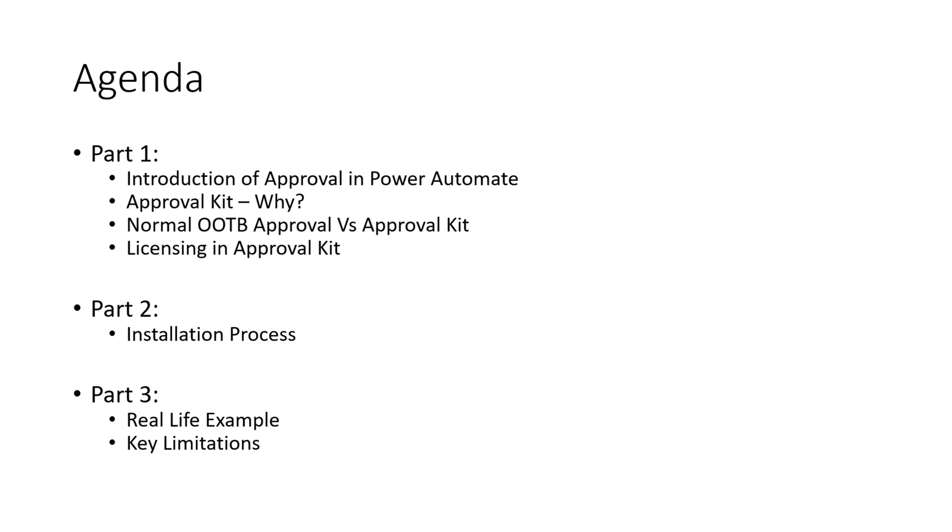The first question that arises in our mind is that the approval action is already available in Power Automate in the out-of-the-box way. Then what does this kit additionally add as a feature set? We'll talk about those things in depth throughout this three-part step-by-step series. In the first part we will be talking about what is Power Automate Approval Kit, how it makes our life easier, how it is different from the out-of-the-box approval action, what rich feature set it offers, and who can use this particular kit.